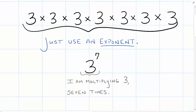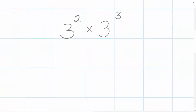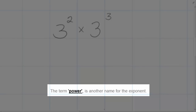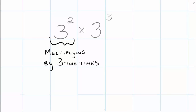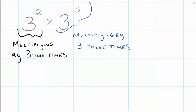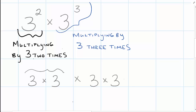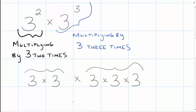So what happens when we see something like 3 to the second power times 3 to the third? Aren't we multiplying really the same number? What does 3 to the second power actually mean, and what does 3 to the third power actually mean? Well, 3 to the second power means we're multiplying by the number three two times, and 3 to the third power means we're multiplying by the number three three times. So it looks like: three times three — that's the first part — multiplied by three times three times three. How many times are we multiplying three together? One, two, three, four, five — looks like five times.